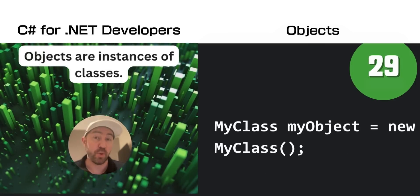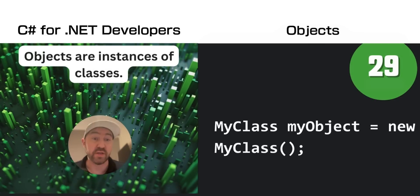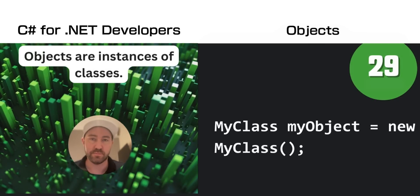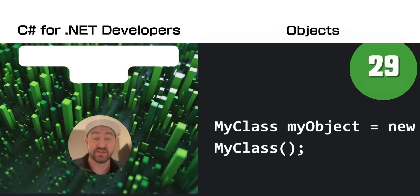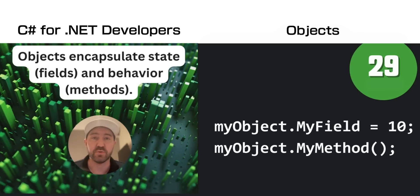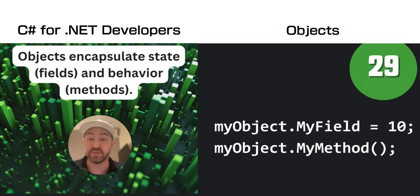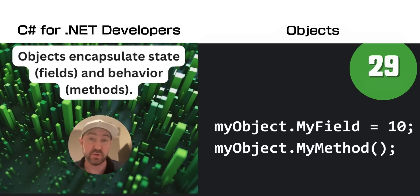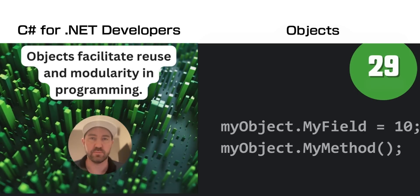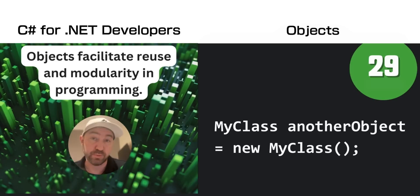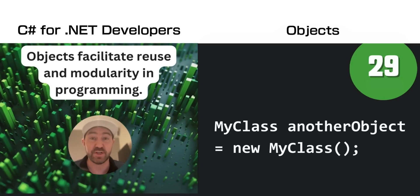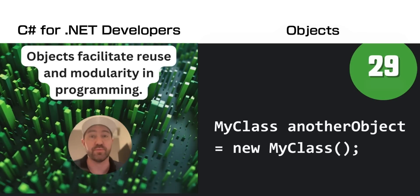An object is commonly, but not always, an instance of a class. An object has state represented by fields and also behaviour represented by methods or functions. You use objects and class objects to facilitate modularity and reuse within your programming.